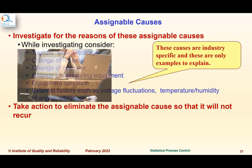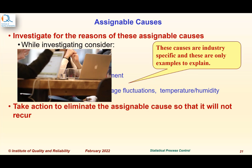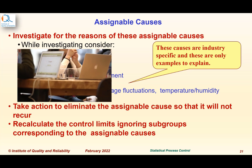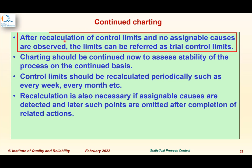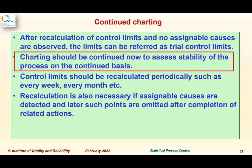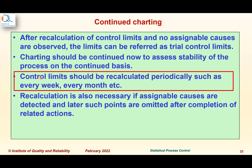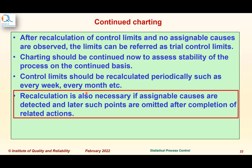Once the reasons are identified, we must take action to eliminate the assignable causes so they do not recur. If we are able to do that, we can omit those points and recalculate the control limits, ignoring subgroups corresponding to assignable causes. After recalculation with no remaining assignable causes observed, the limits are referred to as trial control limits. Charting should continue to assess process stability on an ongoing basis, and control limits should be recalculated periodically — such as every week or month — or when assignable causes are detected.